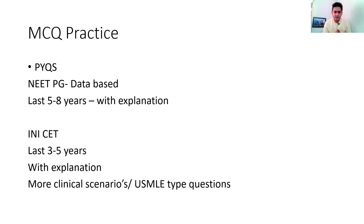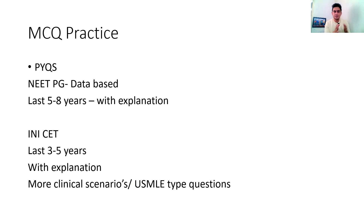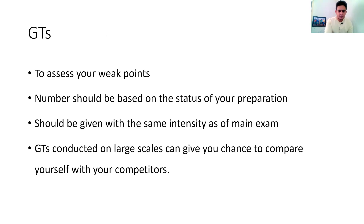For INICET, I think the last three years would be adequate, and if you have time, five years is also advisable since it happens twice a year. You also have to read with explanation. What INICET offers differently from NEET-PG is more USMLE-type, clinical-based questions. AIIMS has a habit of introducing a topic in one exam and asking an advanced question in the next — for example, asking about COVID in one exam and the COVID vaccine in the next. So for INICET, PYQs, especially from the last year, are extremely important. I also advise going through JIPMER questions. PGI questions are not advisable because you don't get multiple correct type questions in INICET.